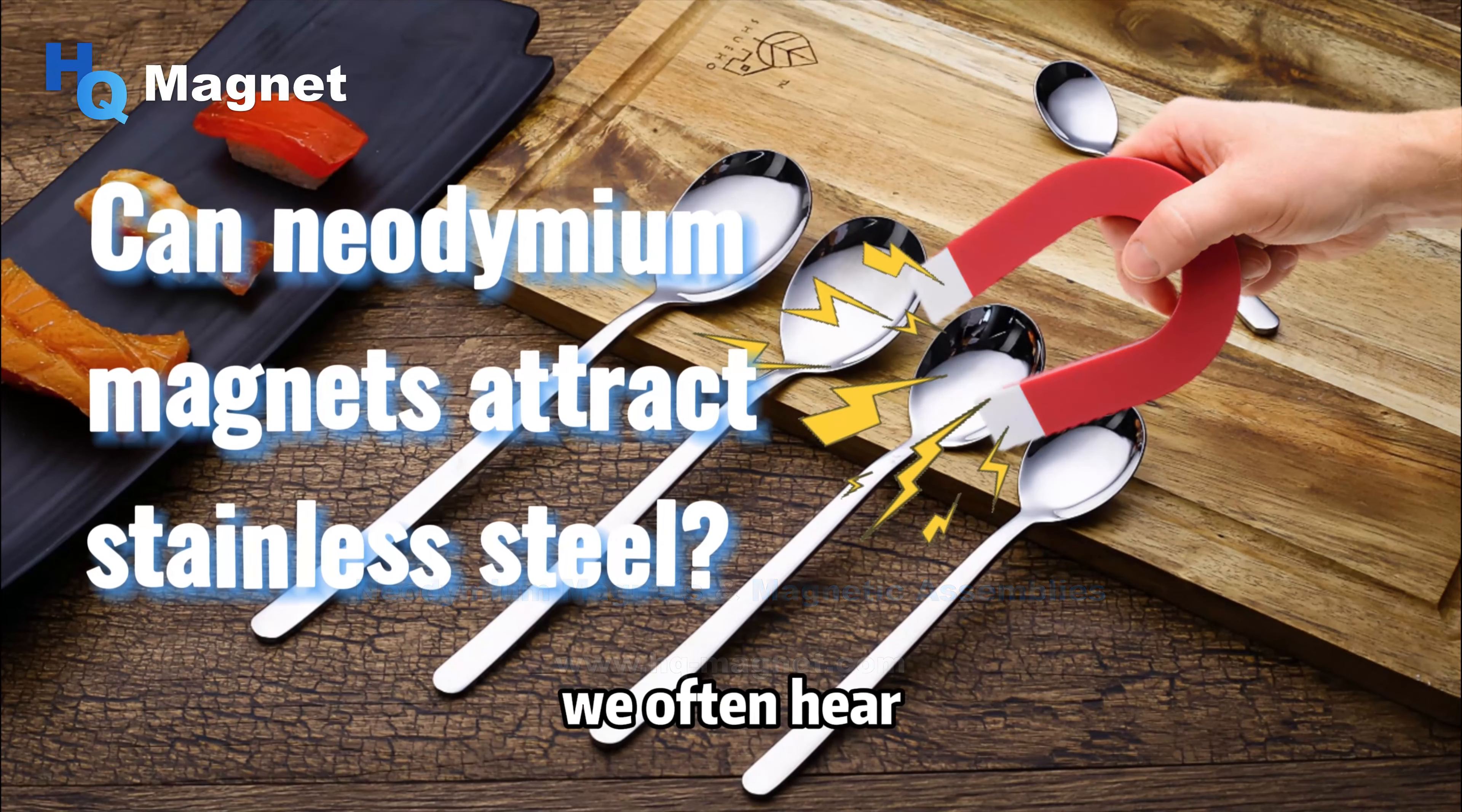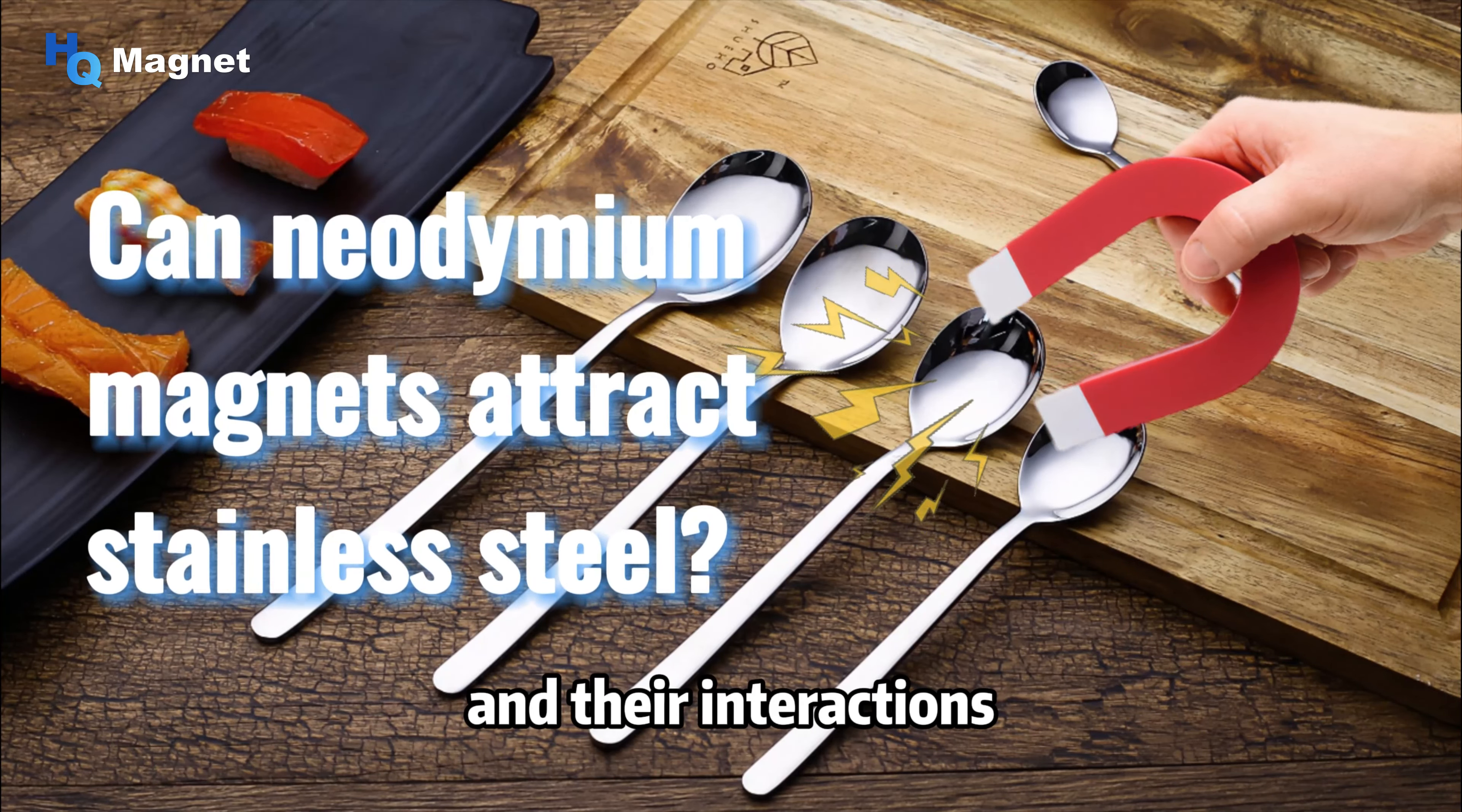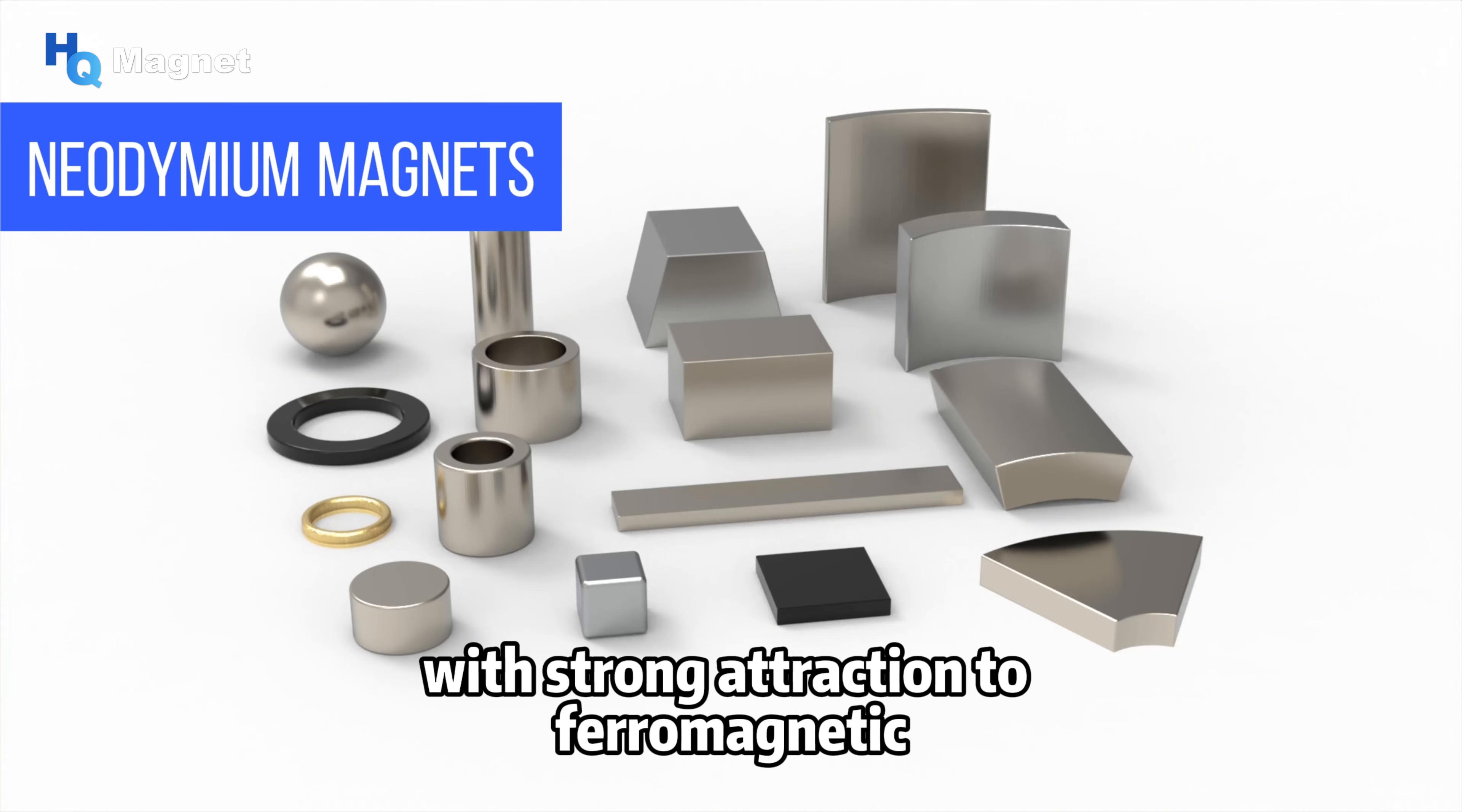In daily life we often hear that stainless steel is not attracted by magnets. However, is this statement correct? Firstly, we need to understand the basic characteristics of stainless steel and neodymium magnets and their interactions. Stainless steel is an alloy typically composed of elements such as iron, chromium, and nickel.